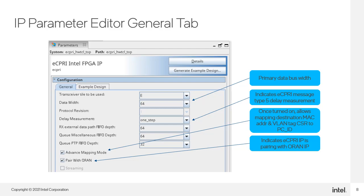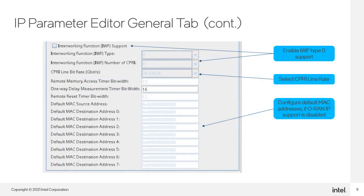Enabling streaming lets you control the maximum Ethernet frame size. Off sets the max frame size to 1500 bytes; On sets it to 9000 bytes. Continuing down the tab, you can see the option to enable IWF type 0 support. Since currently only type 0 and a single ECPRE MAC are supported, the two fields following this are fixed. You can also indicate the CPRE planned line rate for your CPRE interface. Finally, at the very bottom, here is where you can set up the eight default MAC addresses. This pre-programs the MAC address CSRs so you can change them dynamically later if you wish. The MAC addresses are grayed out here as well because ORAN IP support is enabled.